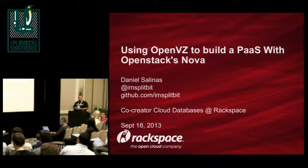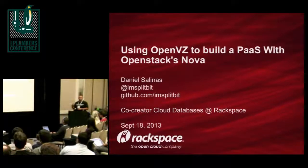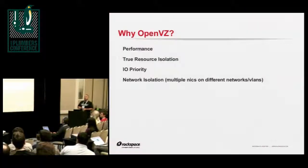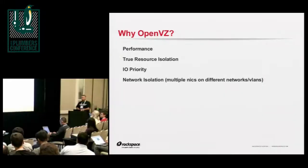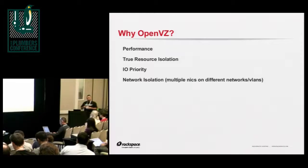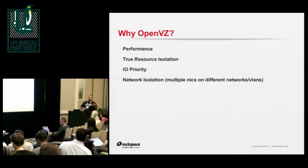At the time, OpenStack really only supported Xen and KVM. And one of the things that we learned through a lot of performance testing was that VMs and databases don't typically tend to get along very well. And so we started doing a lot of investigation with containerizing. We looked at manually using tools to do cgroups, we also looked at LXC — which at the time, about three years ago, was a lot more immature than it is now — and we ended up settling on OpenVZ.